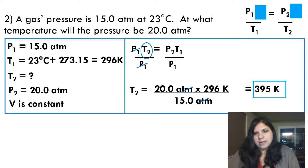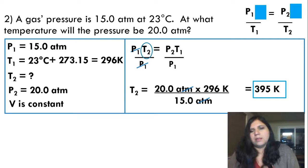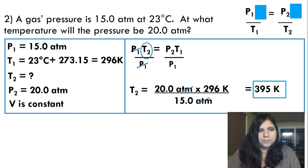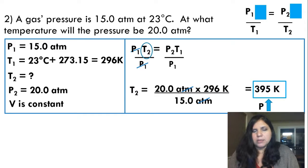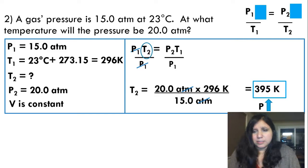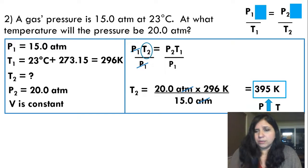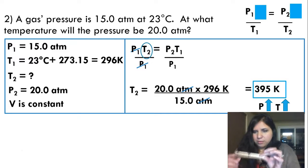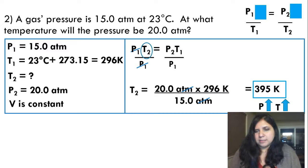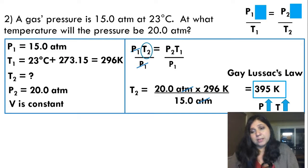You can leave the answer in Kelvin. Does this make sense? Pressure went from 15 to 20 atm — an increase. Temperature went from 296 to 395 K — also an increase. Volume held constant, pressure up and temperature up — that is a direct relationship, so the answer makes sense. This is Gay-Lussac's Law.